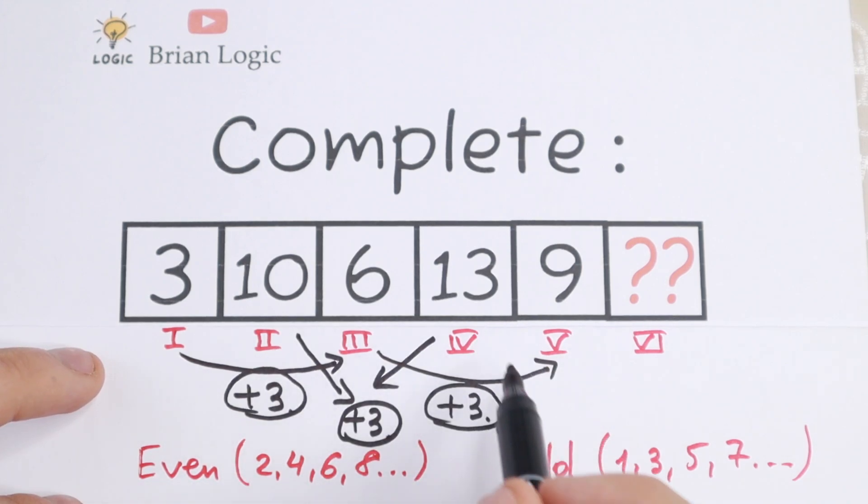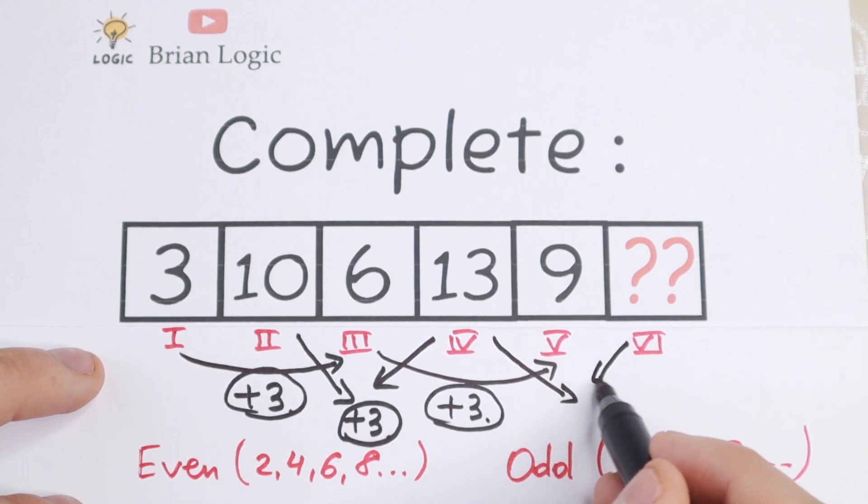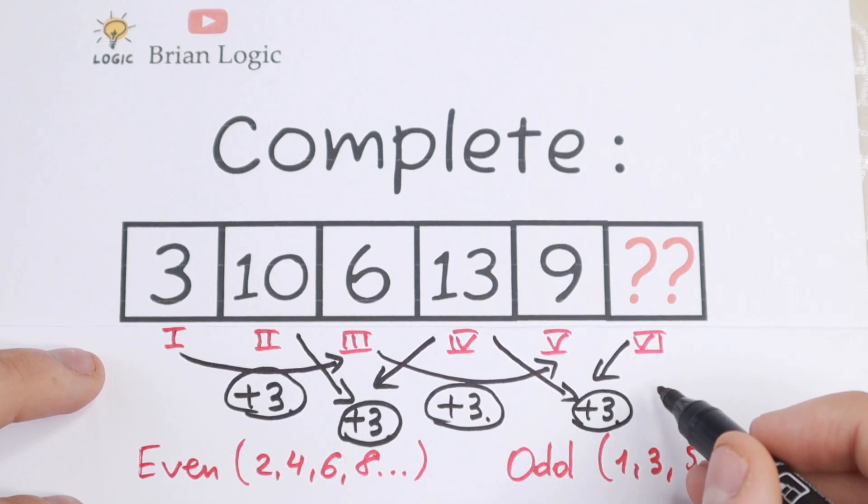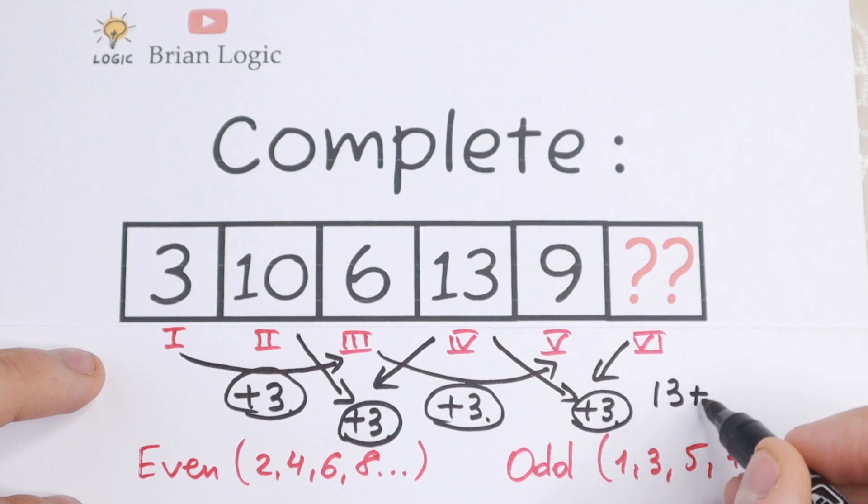And the last step: we need to add 3 to the fourth number, and we will have our sixth number. If we add 3, we will have our answer. 13 plus 3 equals 16.